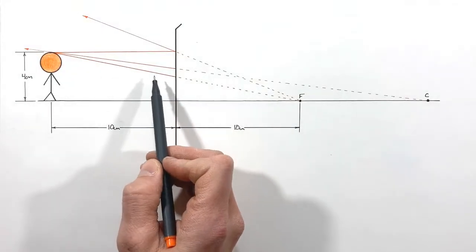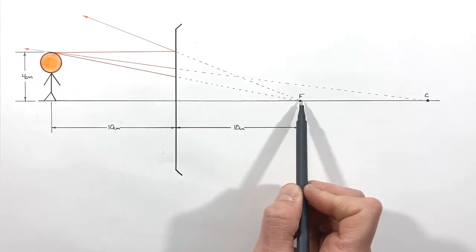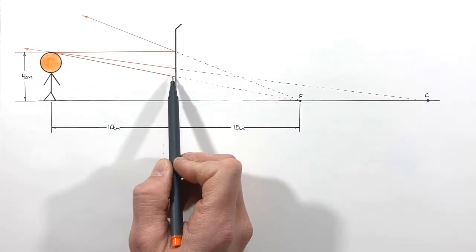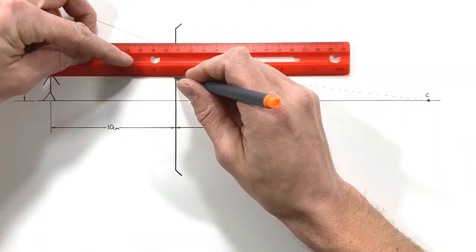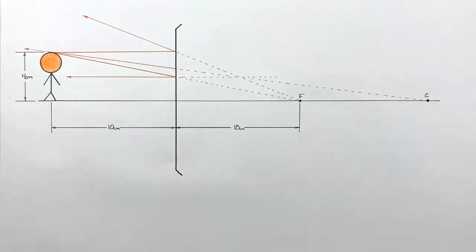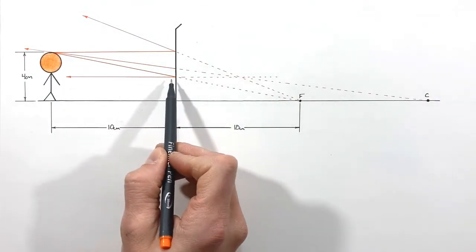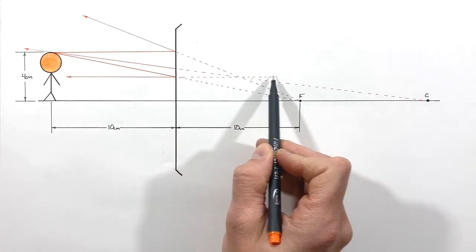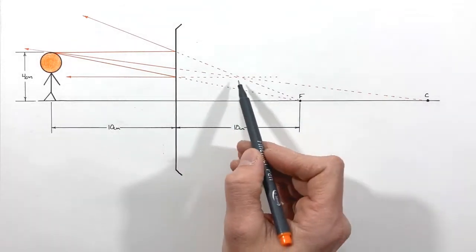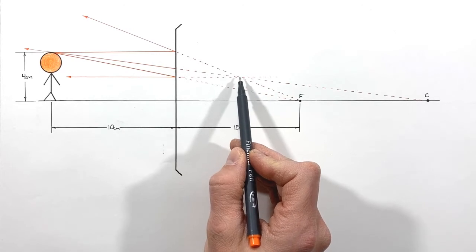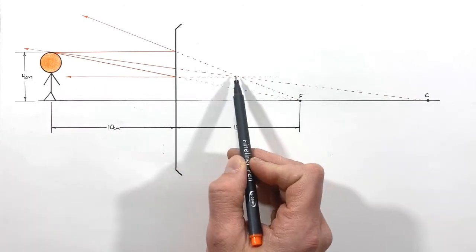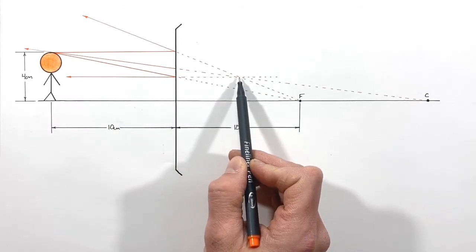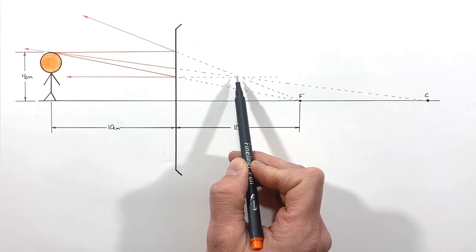Much like the principal ray in reverse, when a ray traveling toward the focal point strikes the mirror, it bounces off traveling parallel to the principal axis. As that focal ray bounces off the mirror, it appears to be coming from a line along here. There is a point back here where all three reflected rays — from the principal ray, the center ray, and the focal ray — appear to originate, and this point of convergence is where our image will form.